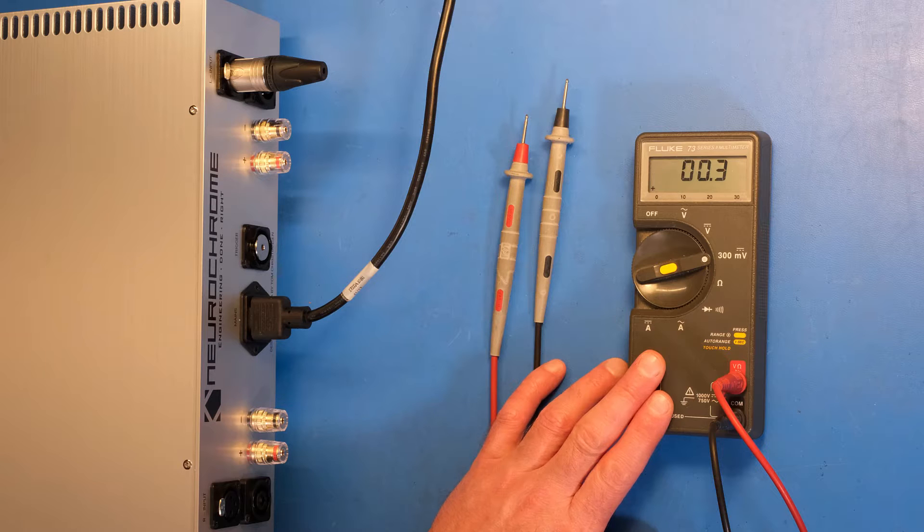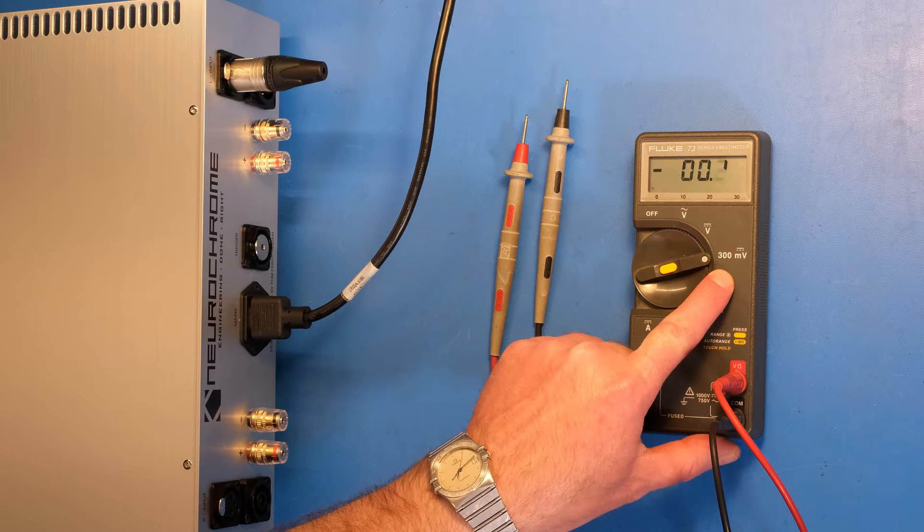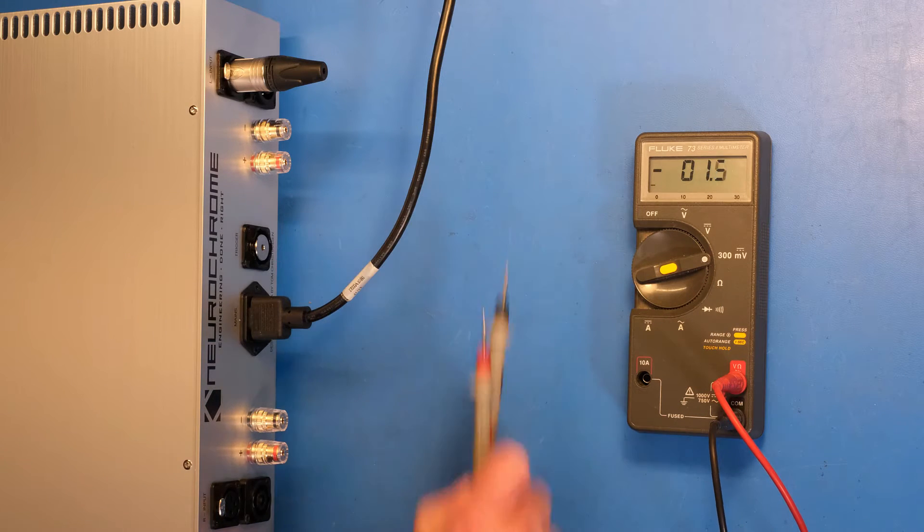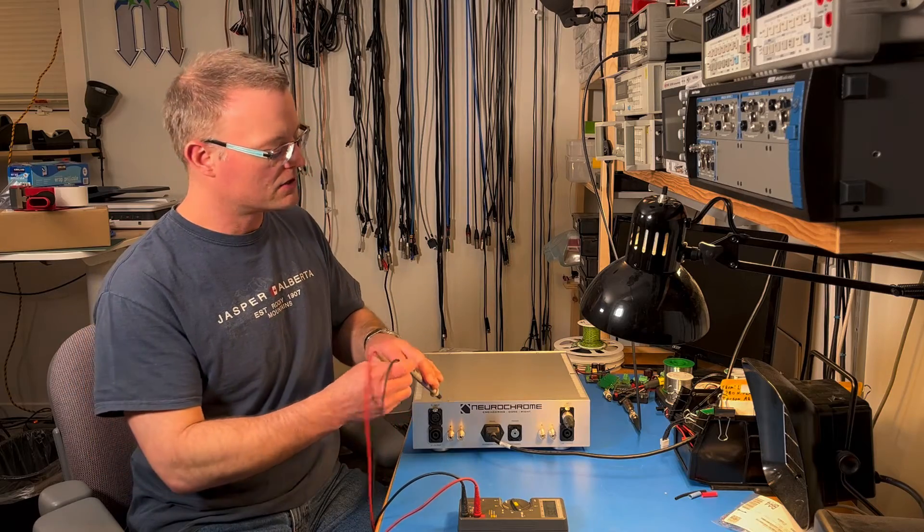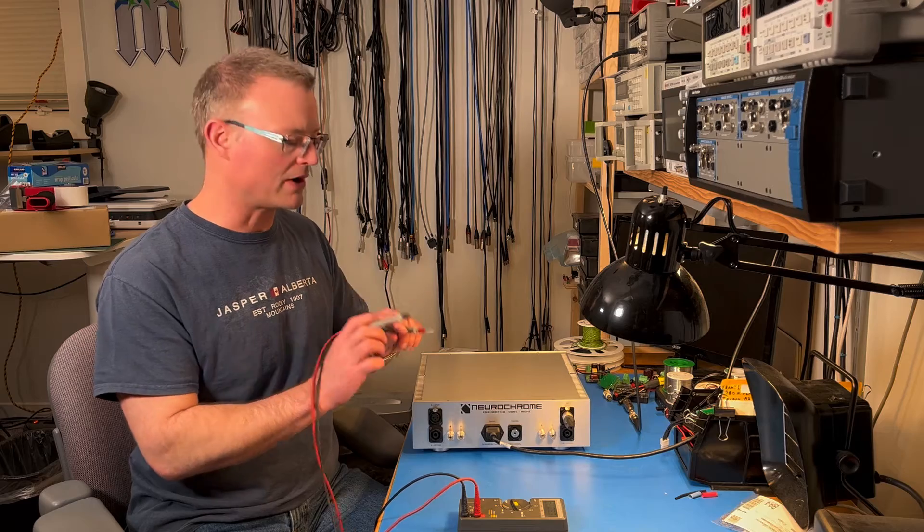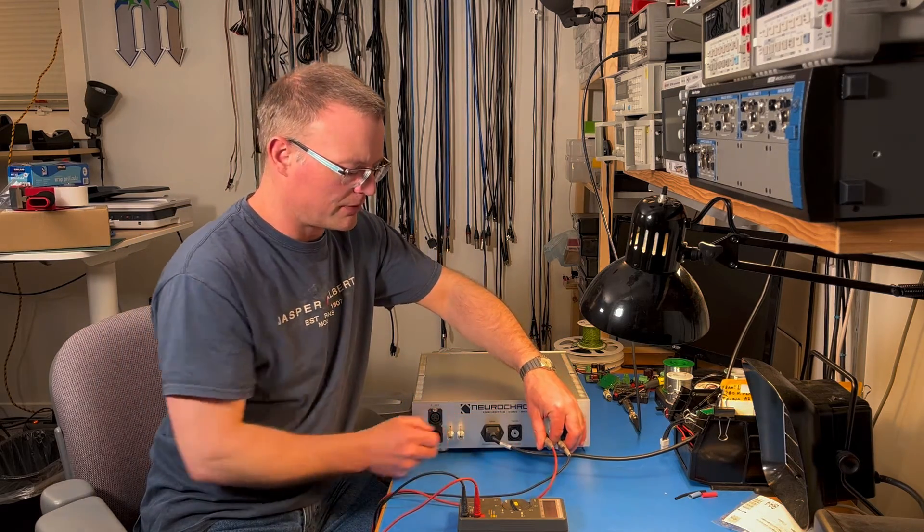This multimeter has a higher sensitivity setting, the 300 millivolt DC range. So I will use that because I expect the DC output to be quite low. So I will use the red probe for plus and the black probe for minus and plug those into the amplifier output like that.